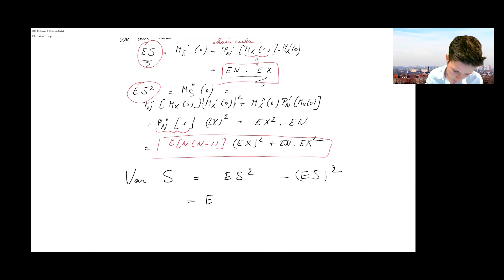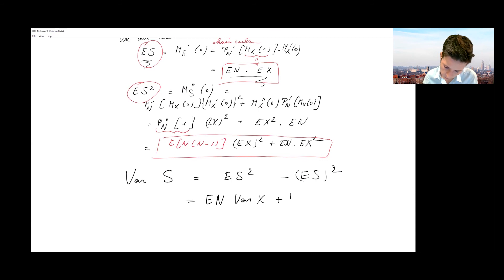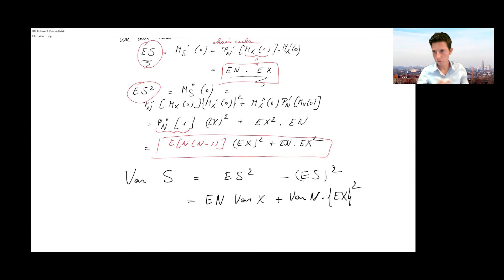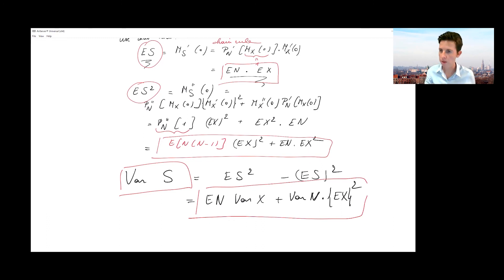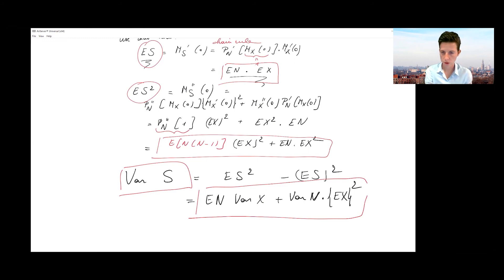Manipulating the expression — which you can follow on the sheets — what you eventually retrieve is: Var(S) = E[N]·Var(X) + Var(N)·(E[X])². This is a complicated derivation, but the end result is very important. You don't need to know it by heart, but you need to be aware of it and be able to quickly compute the variance of S for a compound risk random variable using the expected value and variance of the underlying frequency and severity distributions.